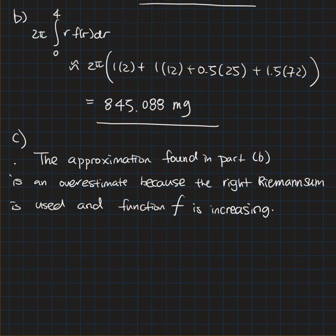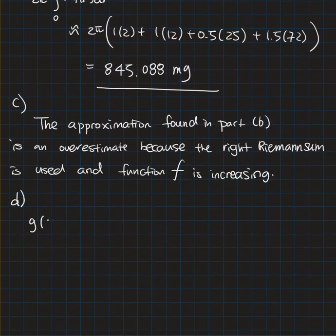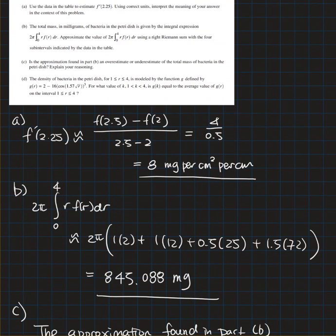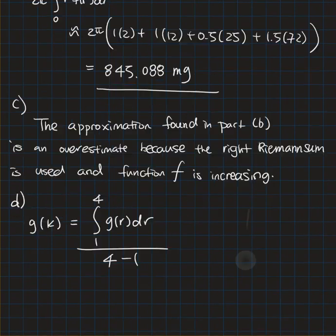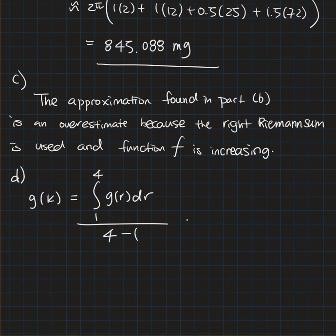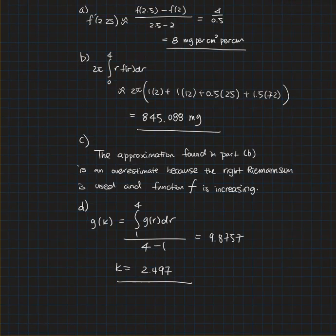First I'll write down the equation which is g of k has to equal the integral of 1 to 4 of g of r dr over 4 minus 1. I plot this function into the calculator and I got the number 9.8757. Then I found the intersection point where g of k equals 9.8757 and I got k equals 2.497. This is it, thank you.